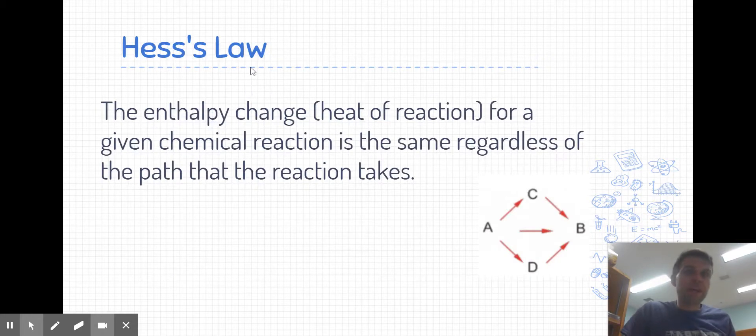Let's start off with a definition for Hess's law. One way to state Hess's law is that the enthalpy change for a given chemical reaction is always going to be the same regardless of the path that the reaction takes. Let's use this diagram here to explain what this statement means.